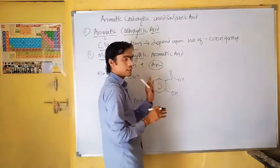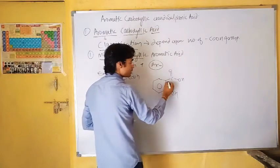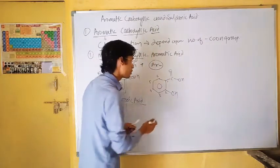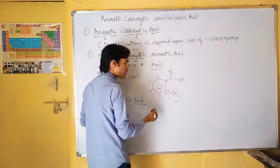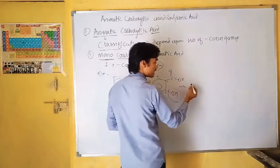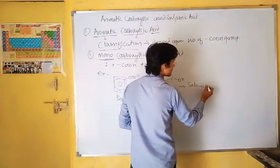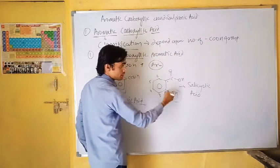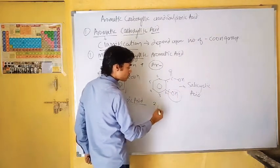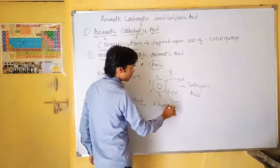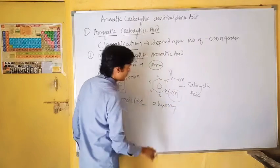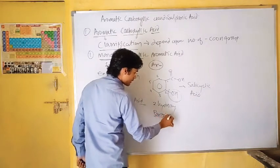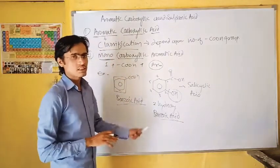According to the priority order, the numbering should be 1, 2, 3, 4, 5, 6 because -COOH has a higher priority order than -OH, so -OH will work as a prefix. The IUPAC nomenclature: the -OH will work as a prefix. Since the -OH is at position 2, it is 2-hydroxy. The common name of this acid is salicylic acid, and the IUPAC name is 2-hydroxybenzoic acid.